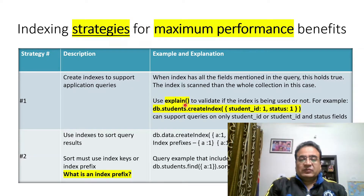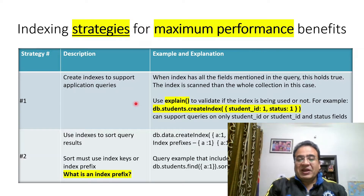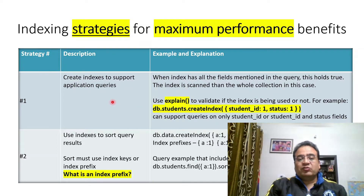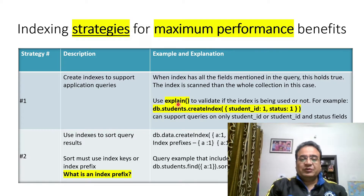One thing that can be used to evaluate whether our queries are actually using indexes is the explain function. Use explain to find out whether a particular query is using indexes, how many documents are being returned, and whether that index is useful or not. I am going to show you this in the hands-on section of this video.